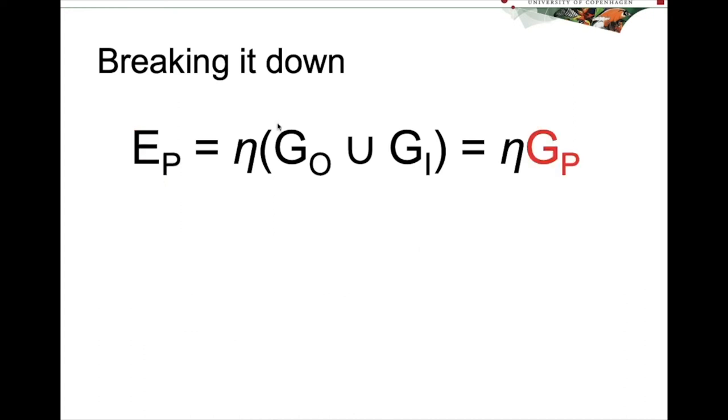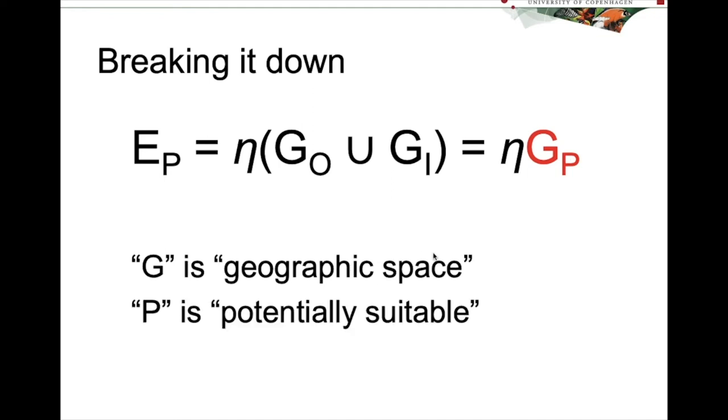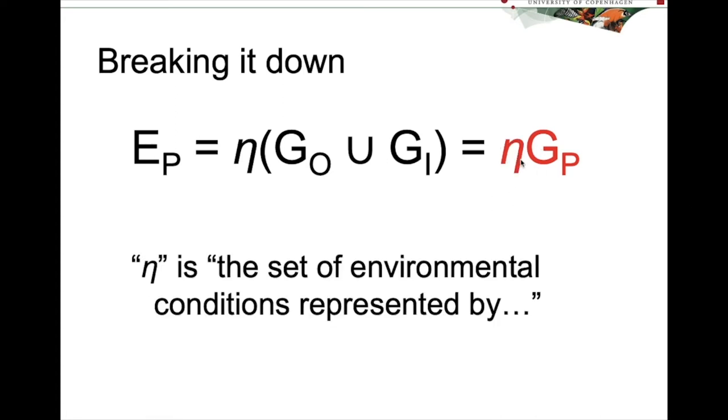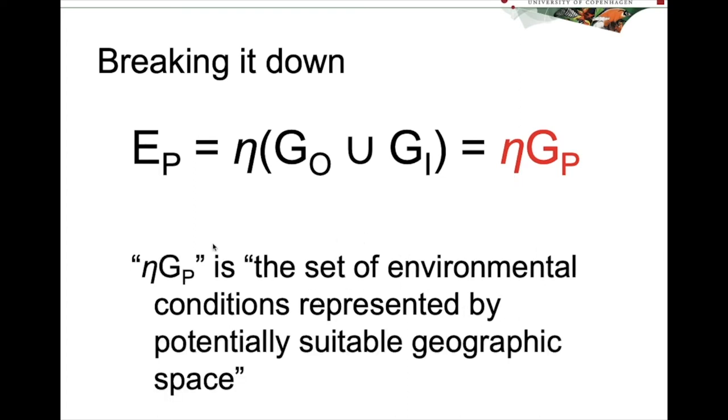So this is what your ecological niche model is identifying, right? This is EP. What about the other stuff? So GP, you might guess, G is geographic space, and P is potentially suitable. So you guessed it, GP is potentially suitable geographic space. But what about this EDA here? In this case, EDA is the set of environmental conditions represented by. So EDA GP is the set of environmental conditions represented by potentially suitable geographic space.